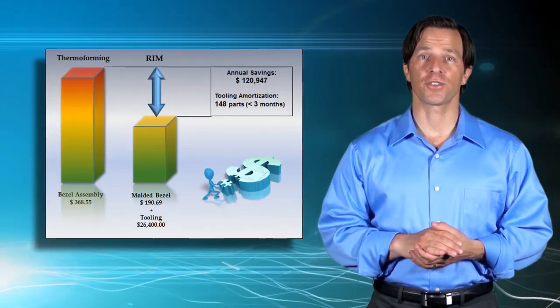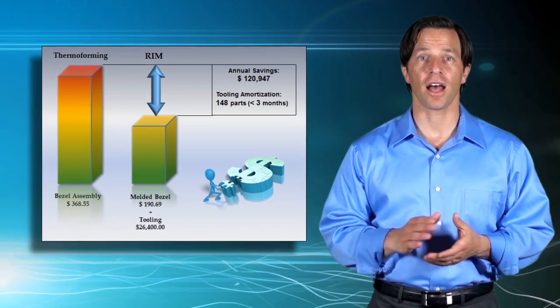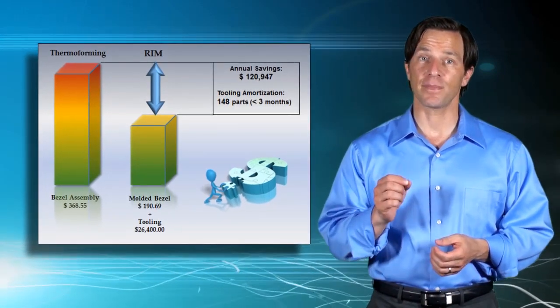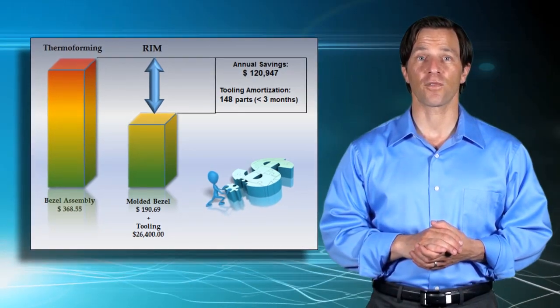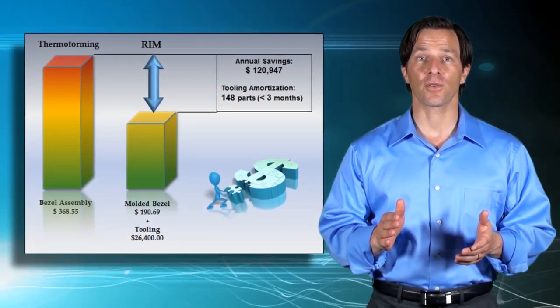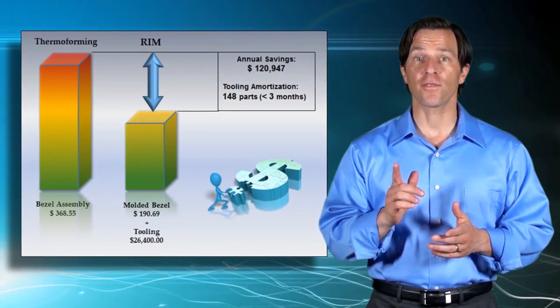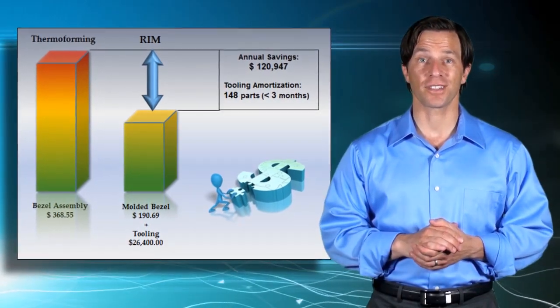Using RIM can often reduce your total manufacturing costs because our cosmetic enclosures can at the same time be both the product's external skin and the structural supporting frame of the enclosure. We can eliminate the need for a separate frame altogether. Think for a minute what cost savings potential this implies.